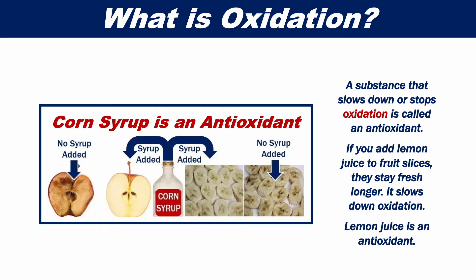A substance that slows down or stops oxidation is called an antioxidant. If you add lemon juice to fruit slices, they stay fresh longer because it slows down oxidation. Lemon juice is an antioxidant.